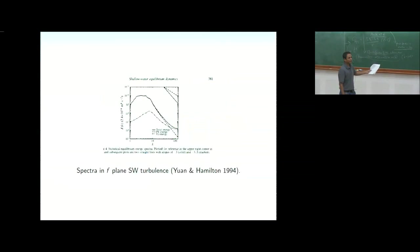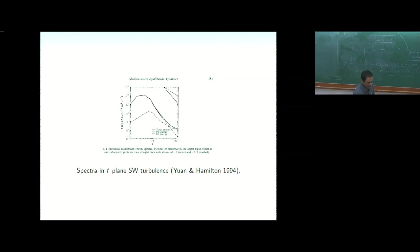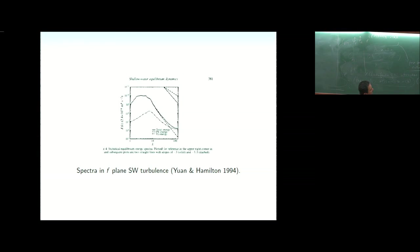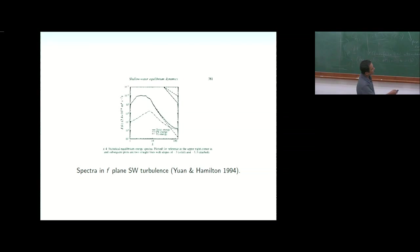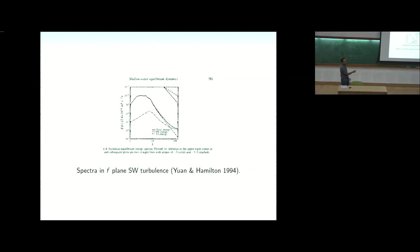Early shallow water turbulence simulations confirm the idea: the total energy spectrum (solid line) shows both rotational modes (dashed, scaling as k^{-3}) and inertia-gravity wave modes (dot-dash, scaling closer to k^{-5/3}), with a spectral transition visible — consistent with the lines marking k^{-3} and k^{-5/3}.